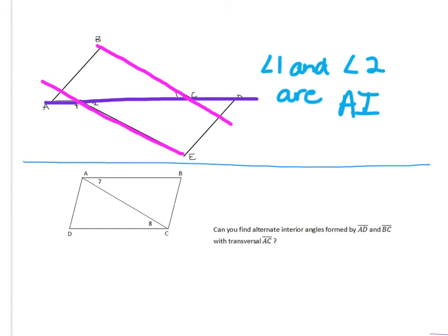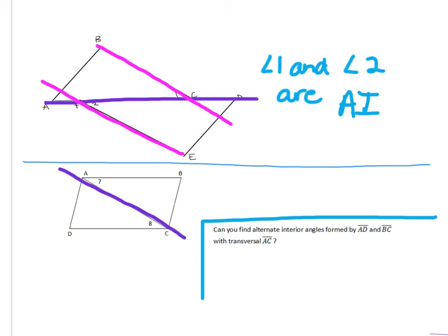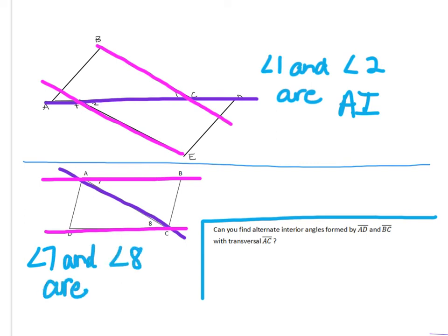All right, next example — let's identify angles seven and eight. You always start with your transversal; going from seven to eight, this is the line that connects them, so we highlight that one. Then draw in your coplanar lines — the lines that give us the rest of the angle. Angles seven and eight are on the inside, so that makes them interior, and they're on alternate sides of the transversal, so they are alternate interior angles.